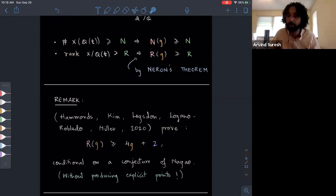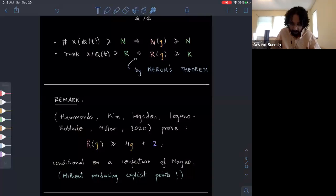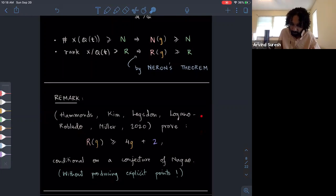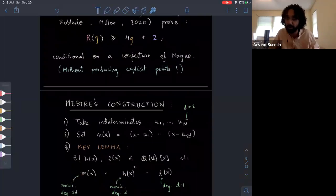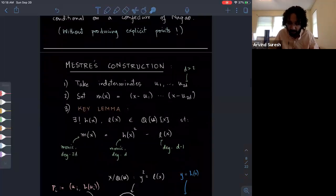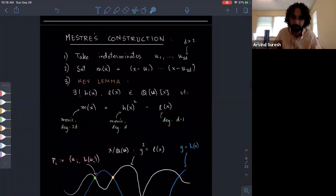It's not actually necessary to go via the specialization method. I just thought I'd mention there's this, I think this is fascinating because it's so completely different from the method that I'm going to be using. These authors proved in a very recent paper, I think it was just released this summer, that R of G is at least 4G plus 2 conditional on a conjecture of Nagao. What's very different about it is they don't actually produce any explicit points on the curves which witness this lower bound for them. How are we going to produce the curves with many rational points that we need to do this specialization method? The idea is we're going to use the construction due to Mestre.